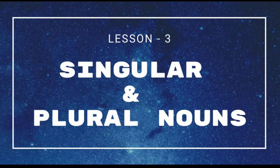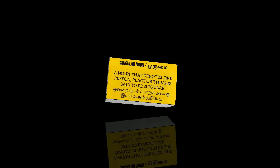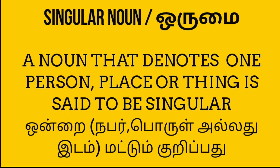The third lesson is about singular and plural nouns. Singular and plural nouns: in Tamil, you can say one thing. A noun that denotes one person, place or thing is said to be singular — that's one thing, only one thing.